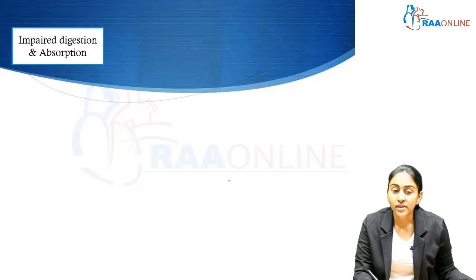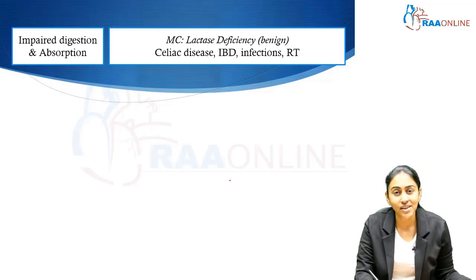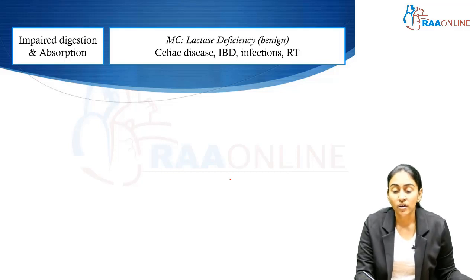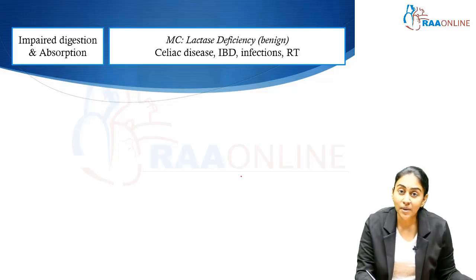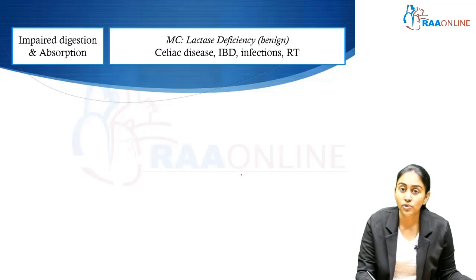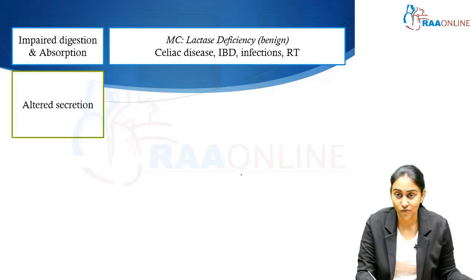Now let us look at how impaired digestion and absorption works. The most common disorder causing impaired digestion and absorption is lactase deficiency, but this is very benign. When a condition is going to be benign, it is rarely going to cause significant systemic symptoms like loss of weight or other features of nutritional deficiency. Other diseases which may present with loss of weight or nutritional deficiencies may include celiac disease, inflammatory bowel disease, infections, and post-radiation. These are the different causes of disorders affecting digestion and absorption.